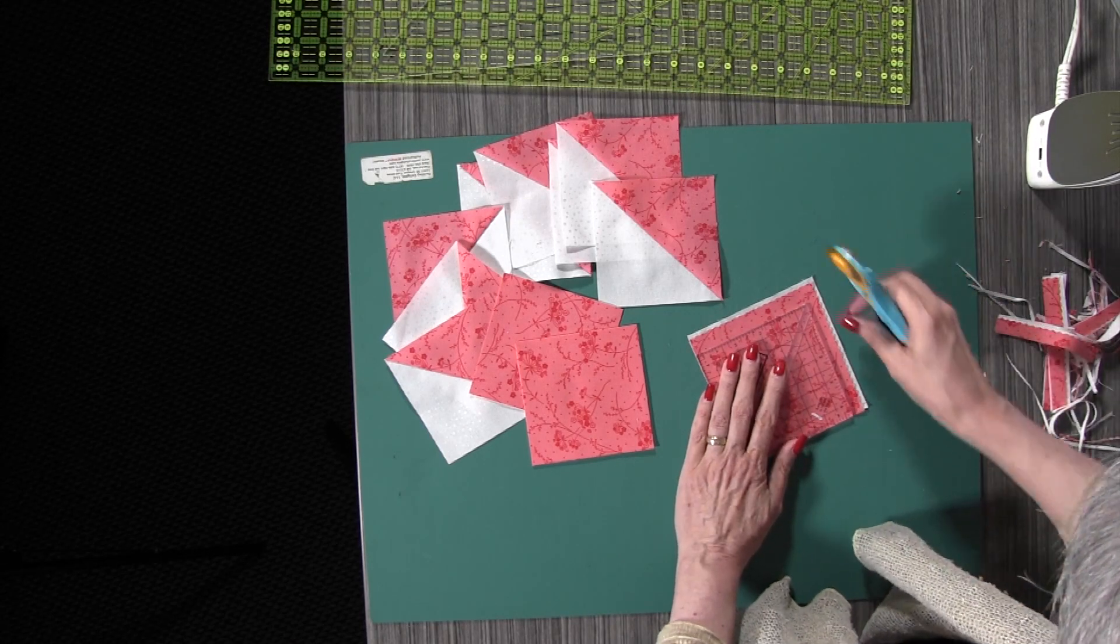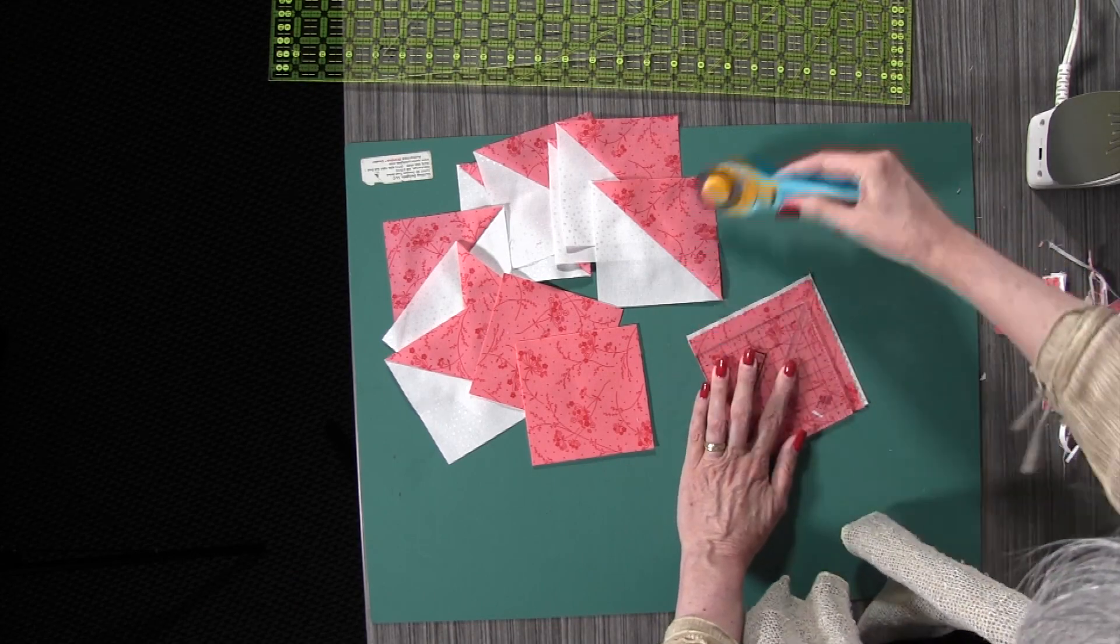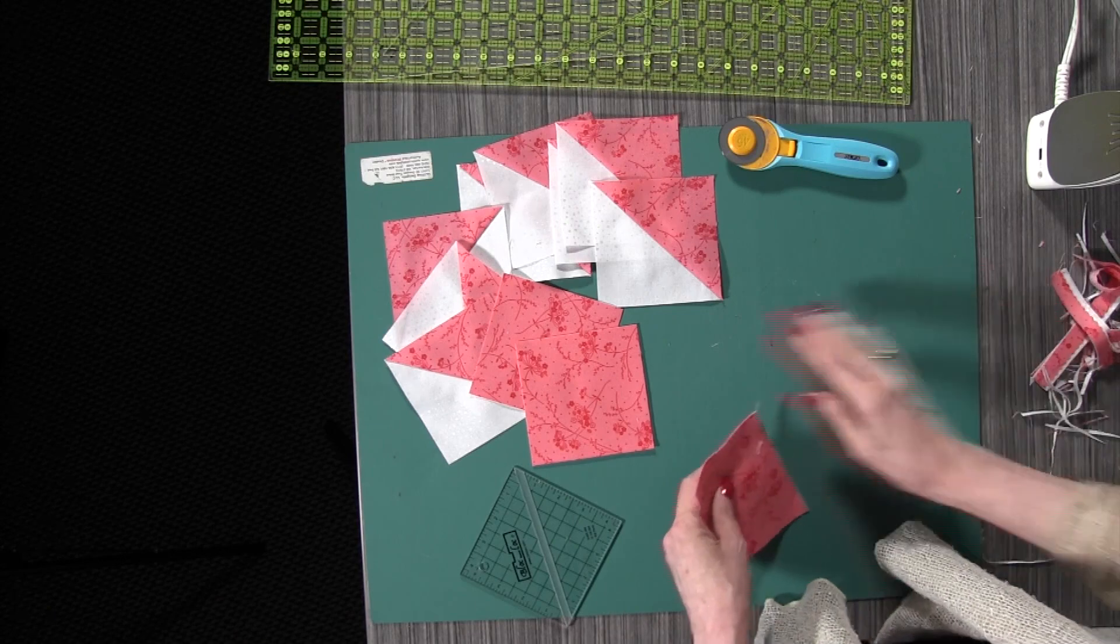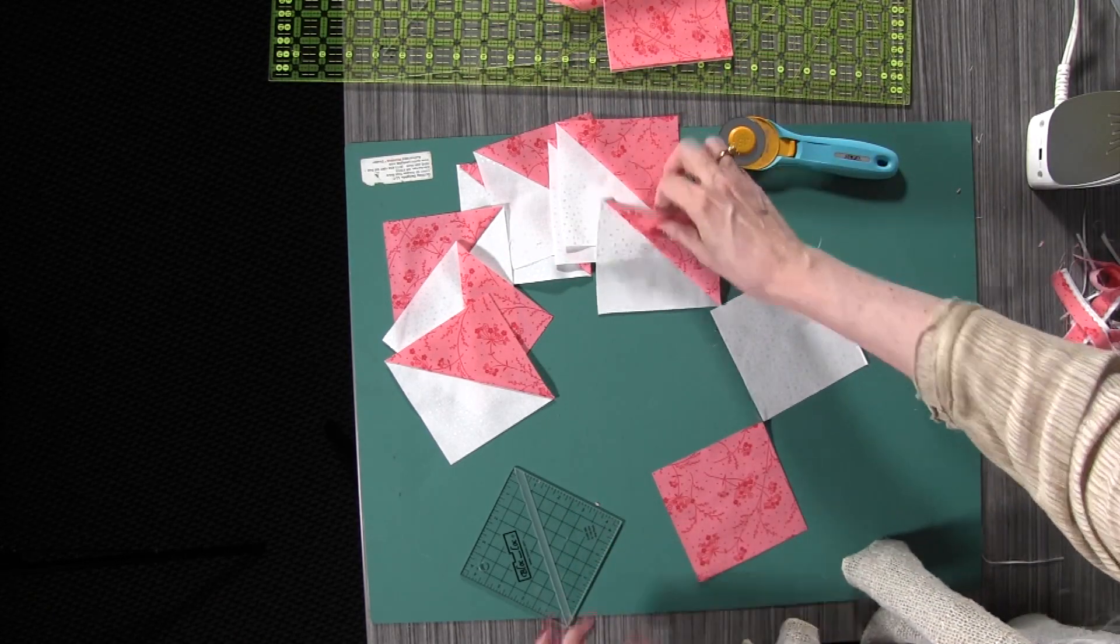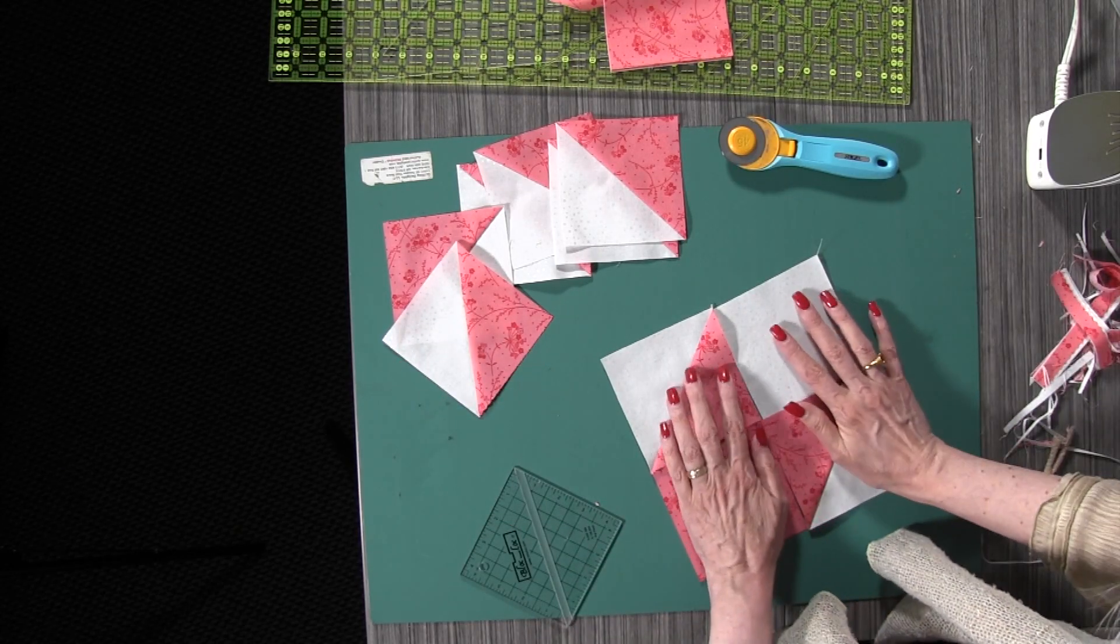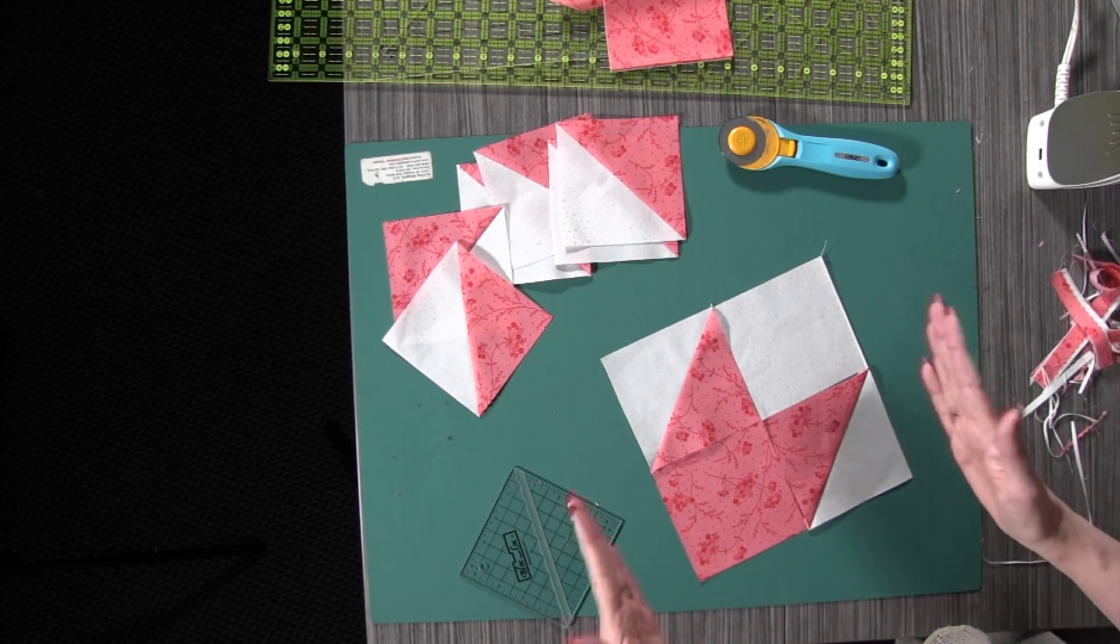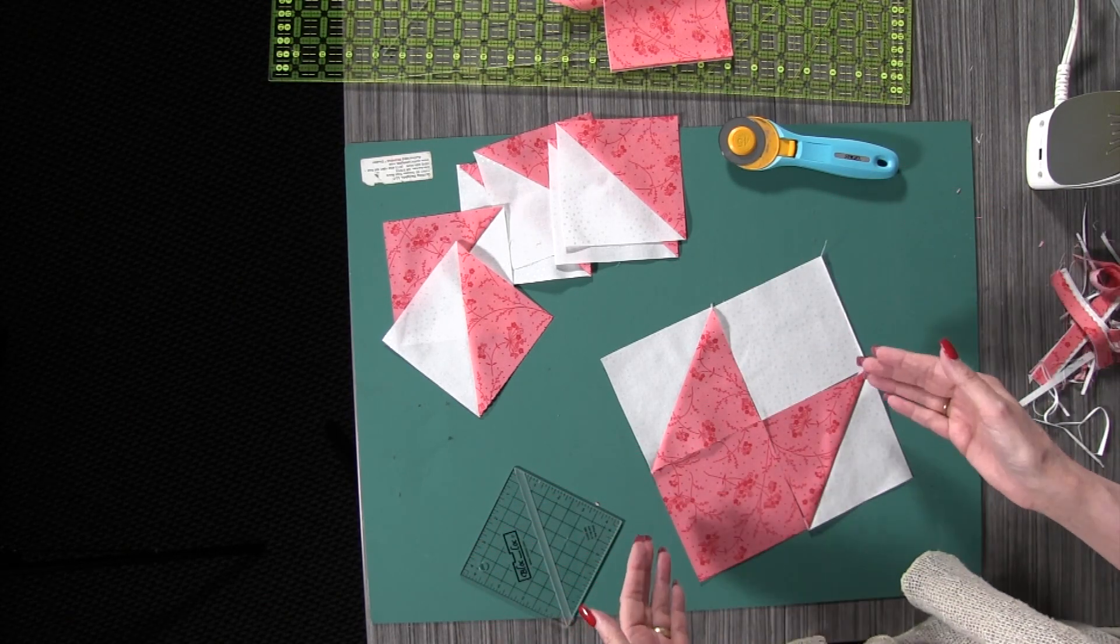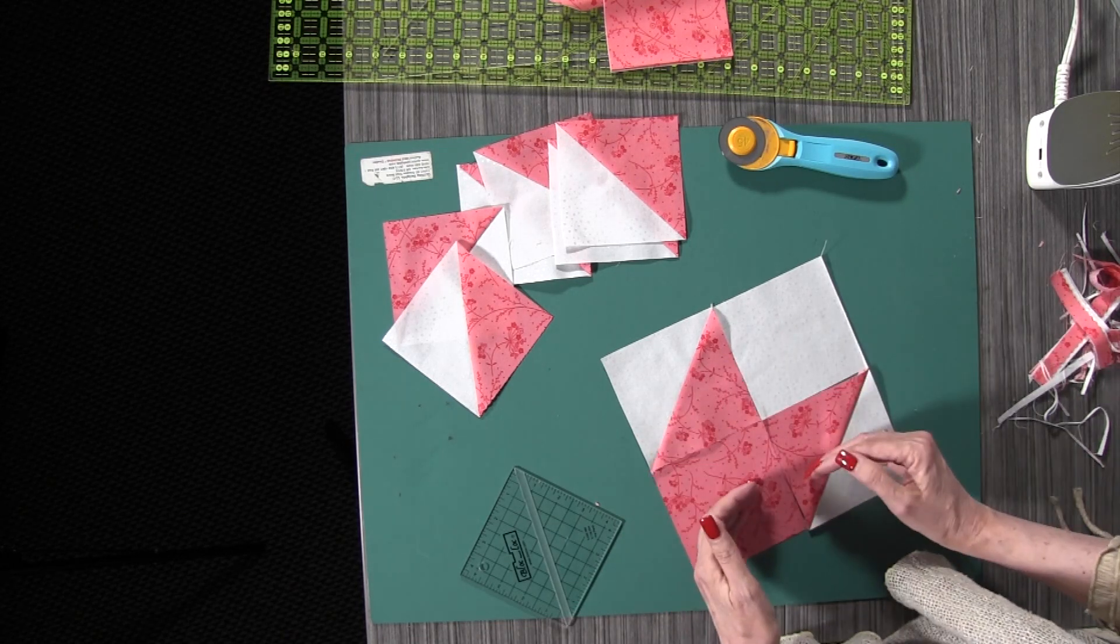Now watch the magic happen on this block. We can either make the flower block, which is like this. The flower block takes one colored square, one background square, one half square triangle on one side and one half square triangle on the other side. It comes together just like that. This is one fourth of the entire block, but it makes a beautiful flower and you're going to sew these together and then you're going to sew them to each other.